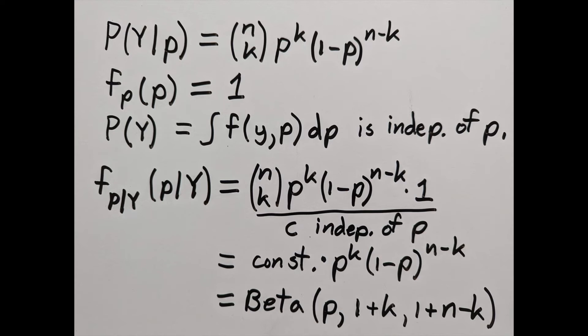When we put all these pieces together, we get the new density of p given the data, which is n choose k, p to the k, 1 minus p to the n minus k, times 1 and divided by a constant independent of p. So overall, that's a constant times p to the k times 1 minus p to the n minus k.